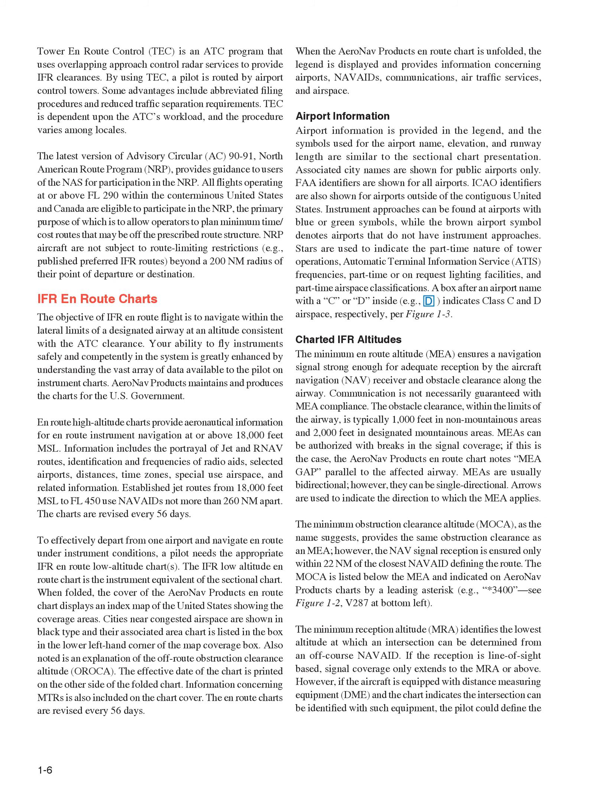Tower-en-route control, TEC, is an ATC program that uses overlapping approach control radar services to provide IFR clearances. By using TEC, a pilot is routed by airport control towers. Some advantages include abbreviated filing procedures and reduced traffic separation requirements. TEC is dependent upon ATC workload, and the procedure varies among locales. The latest version of Advisory Circular, AC, 90-91, North American Route Program, NRP, provides guidance to users of the NAS for participation in the NRP. All flights operating at or above FL-290 within the conterminous United States and Canada are eligible to participate in the NRP, the primary purpose of which is to allow operators to plan minimum time/cost routes that may be off the prescribed route structure. NRP aircraft are not subject to route-limiting restrictions beyond a 200 nautical miles radius of their point of departure or destination.